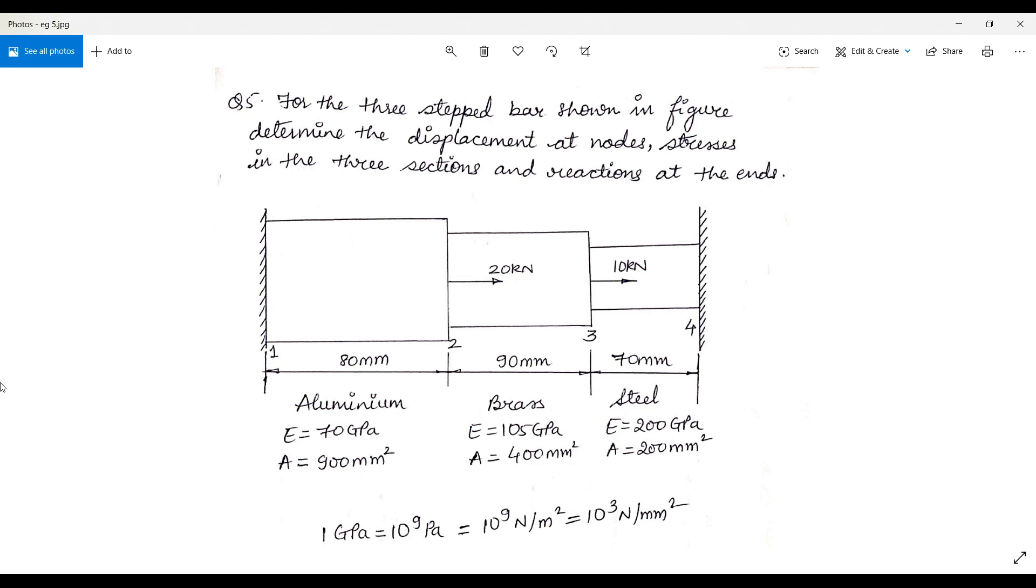Here there are three step bars. This is the first one whose length is 80 mm. The material is aluminum. Young's modulus is given as 70 GPa and area is given as 900 mm².